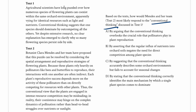Text one says agricultural scientists have long puzzled over how numerous species of flowering plants can coexist within the same orchard environment, apparently vying for identical resources such as light and nutrients. Conventional thinking suggests that one species should dominate by outcompeting the others, yet despite extensive research no clear explanation has emerged for why so many flowering species persist side by side.